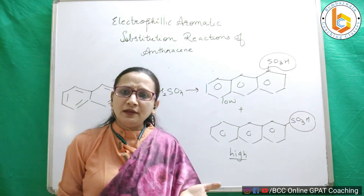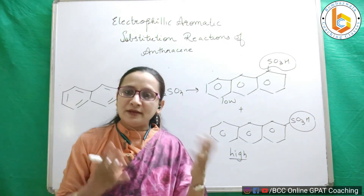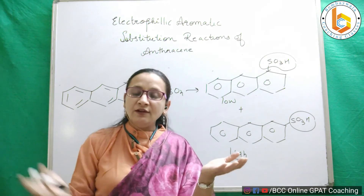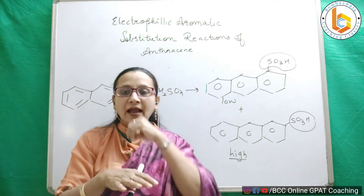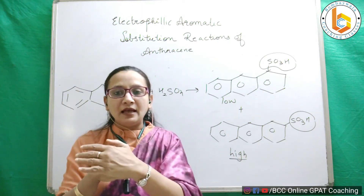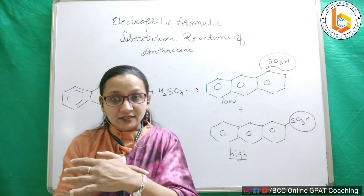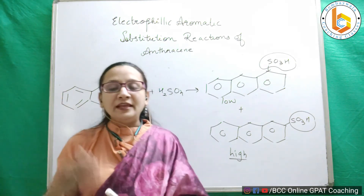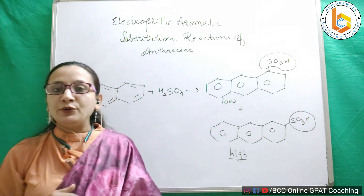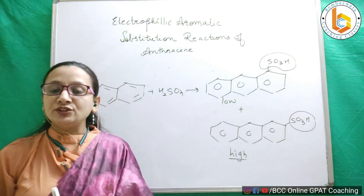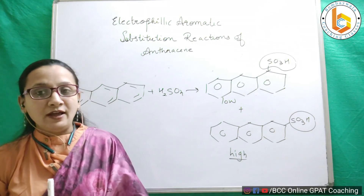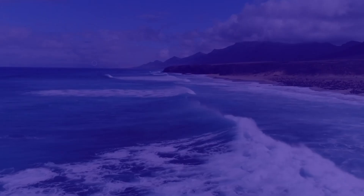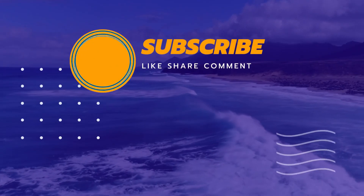So these are the electrophilic aromatic substitution reactions of anthracene — they are very similar to what we did for benzene and naphthalene, and we will do the same for phenanthrene. In our next video we will talk about the oxidation and reduction reactions of anthracene. Don't forget to subscribe to this channel. Thank you.